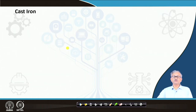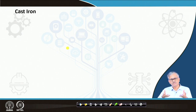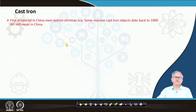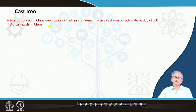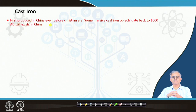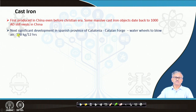Cast iron means you have to make liquid iron and cast it into different shapes. Cast iron was first produced even before the Christian era in China. In the Chinese museum you can find large objects of cast iron dating back to around 1000–1080 AD.